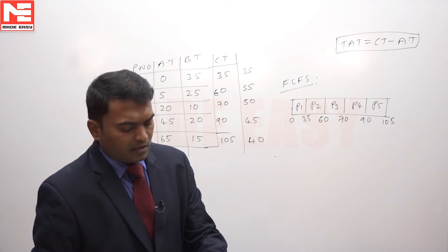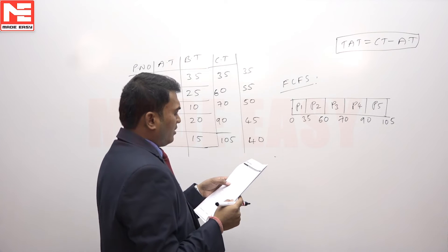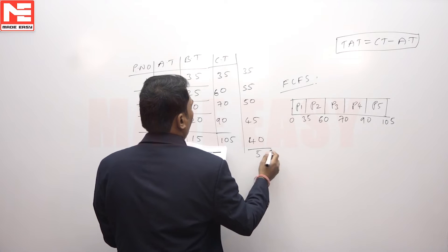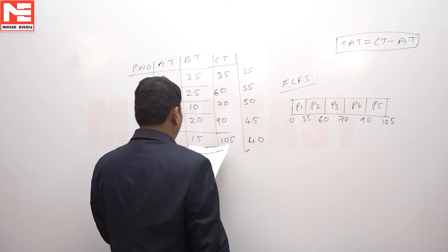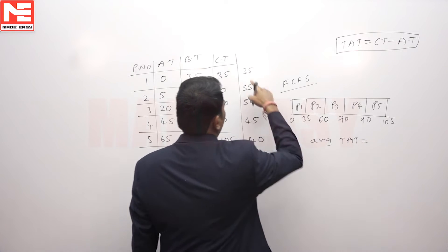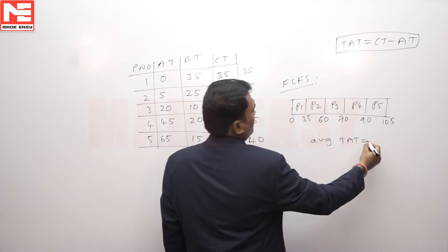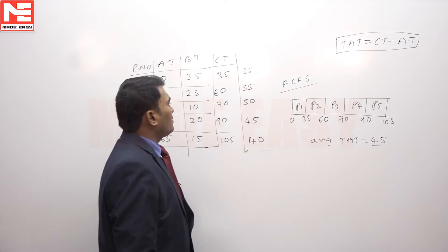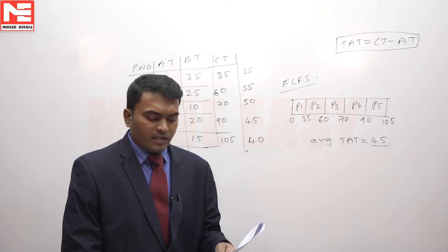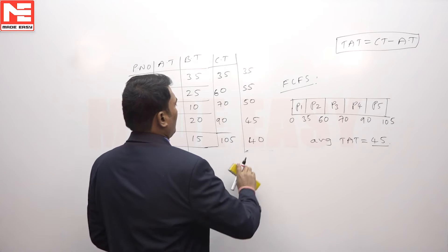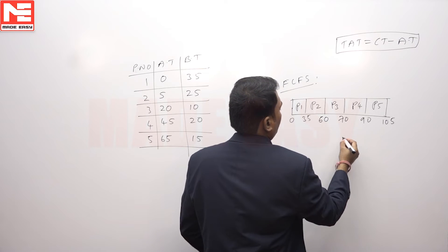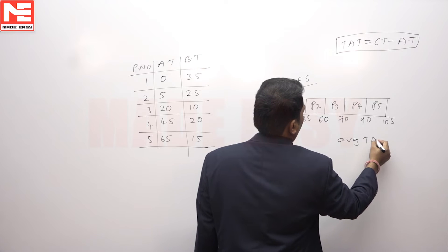Check: 35, 55, 50, 45, 40. Add all of them and divide by 5. The average turnaround time for FCFS comes out to 45. Now let us solve the problem with SRTF — Shortest Remaining Time First. With FCFS, average turnaround time is 45.